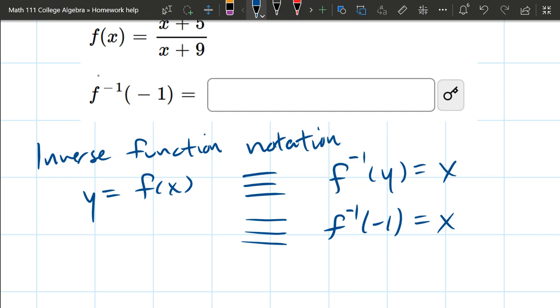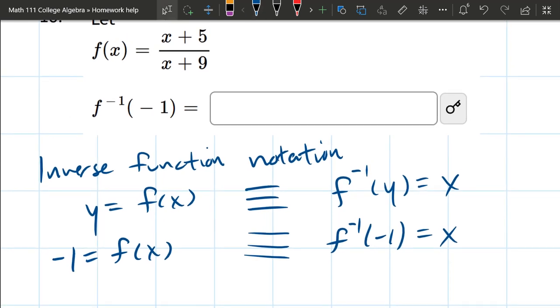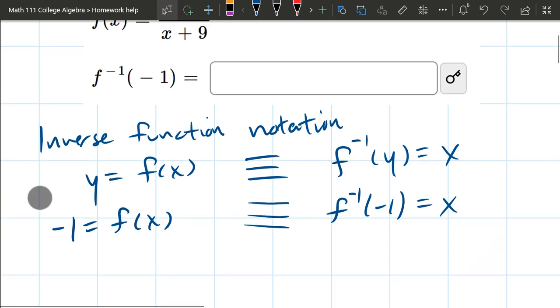If I move the function to the other side, I have -1 equals f(x). We have f(x) already at the top: it's (x+5) divided by (x+9).